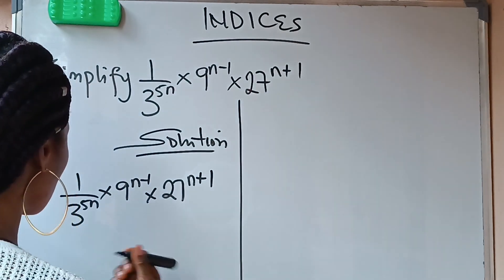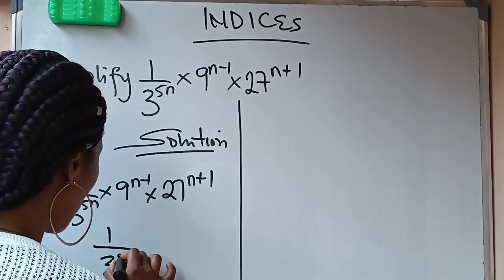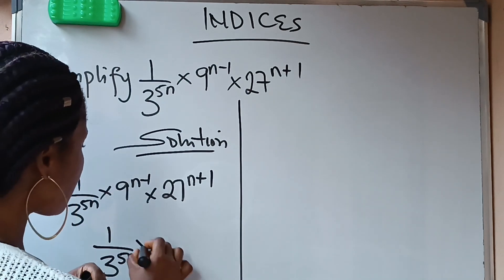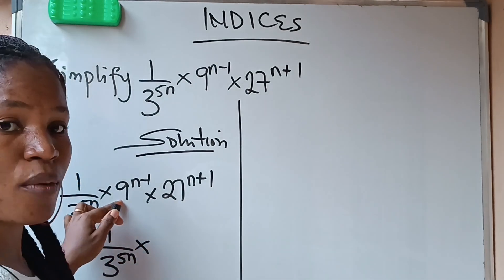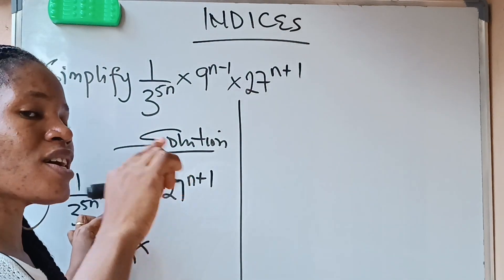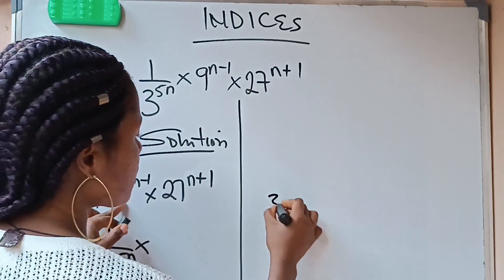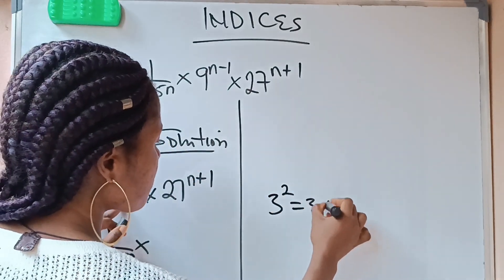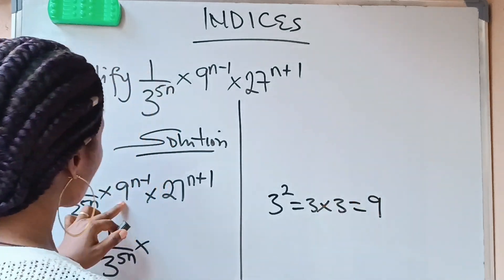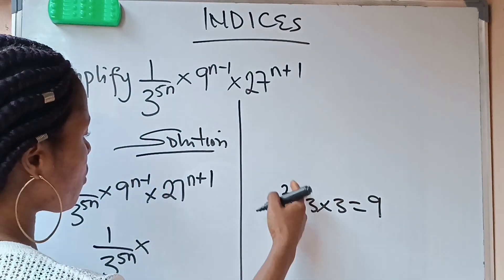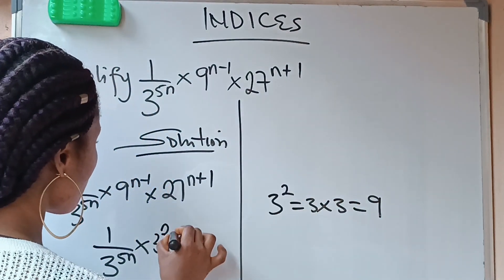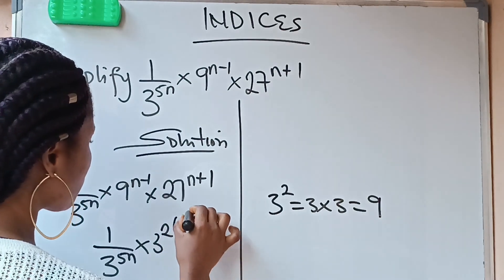Because I can rewrite this now as 1 over 3 raised power of 5n times, instead of me to write 9, I'll write 3 raised power of 2. Because 3 raised power of 2, that is 3 times 3, which is 9. So instead of me to write 9, I'm going to write 3 raised to the power of 2. Remember your n minus 1.